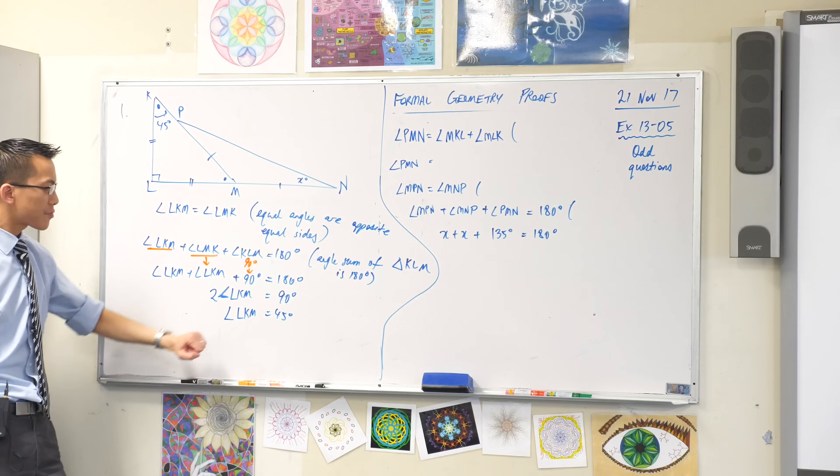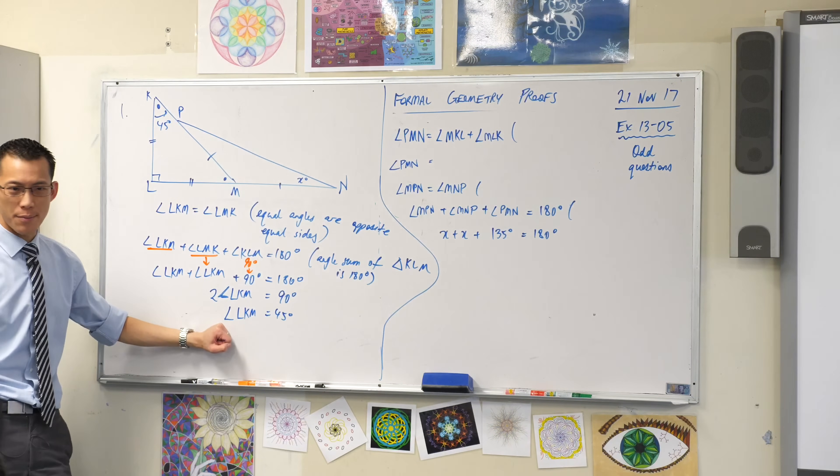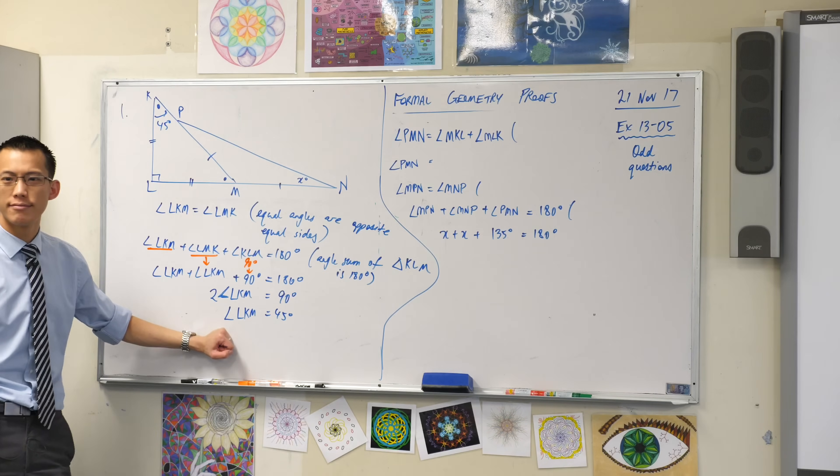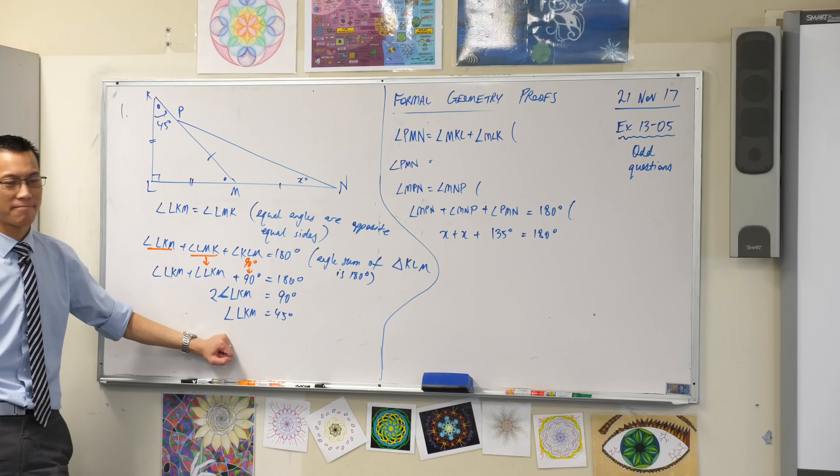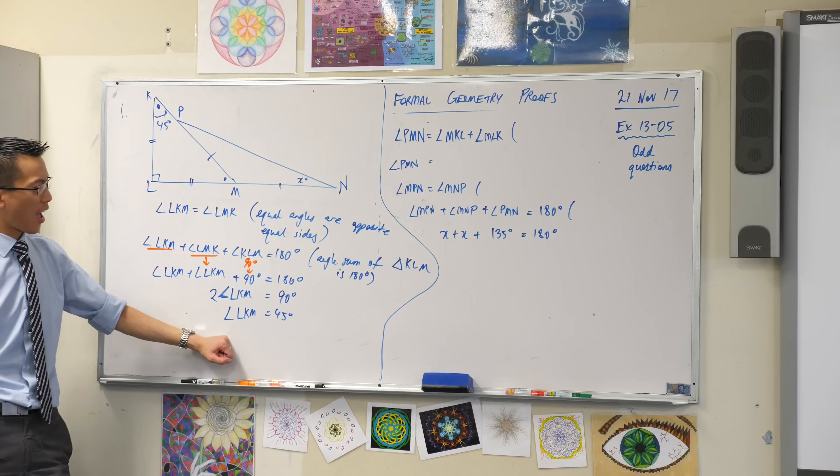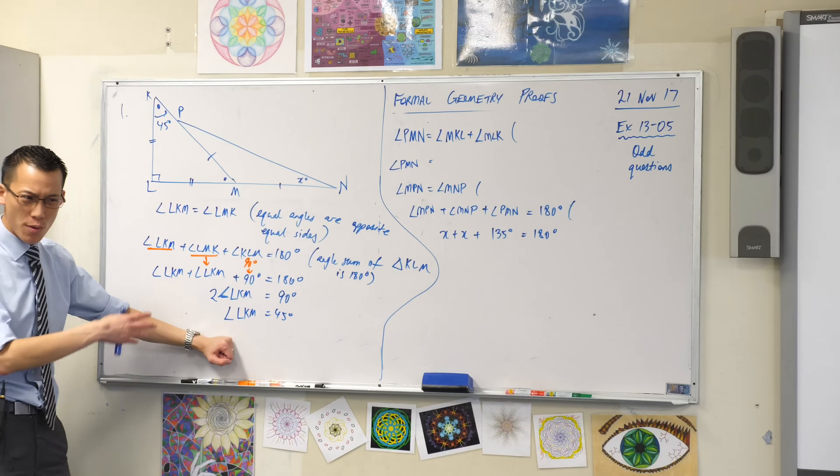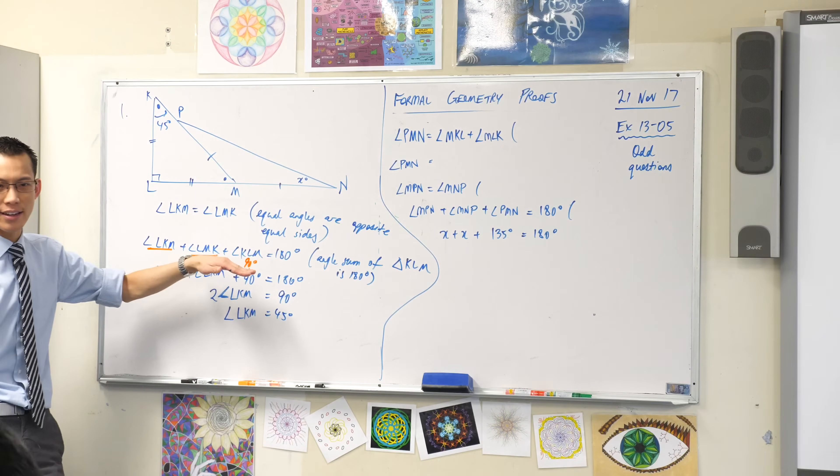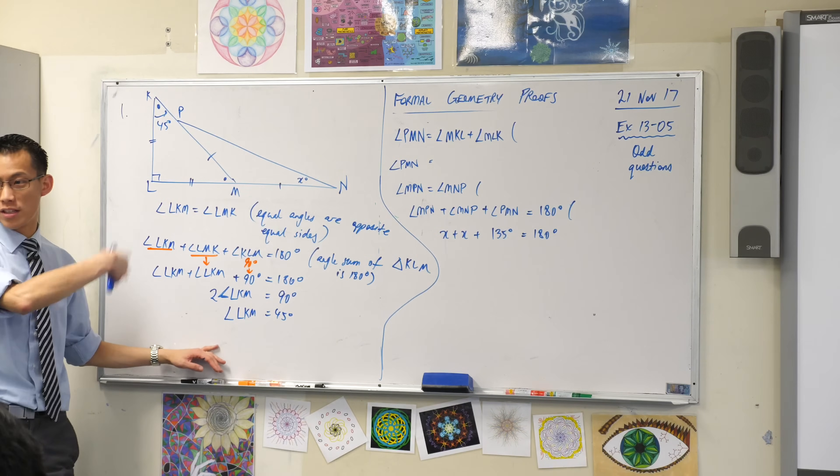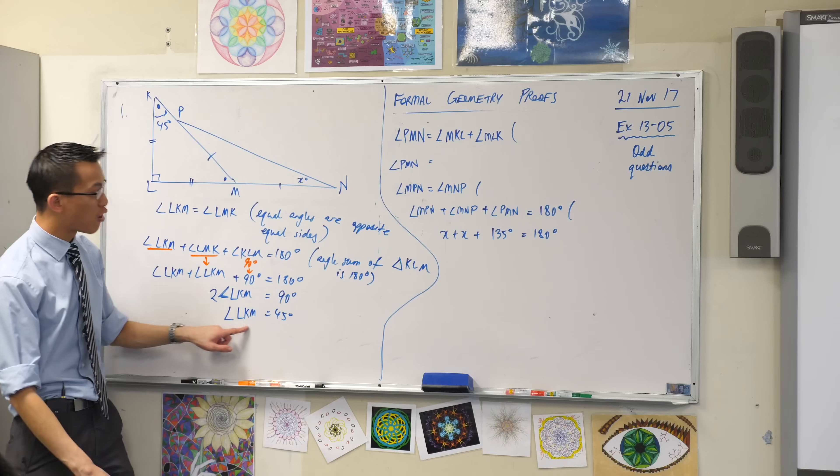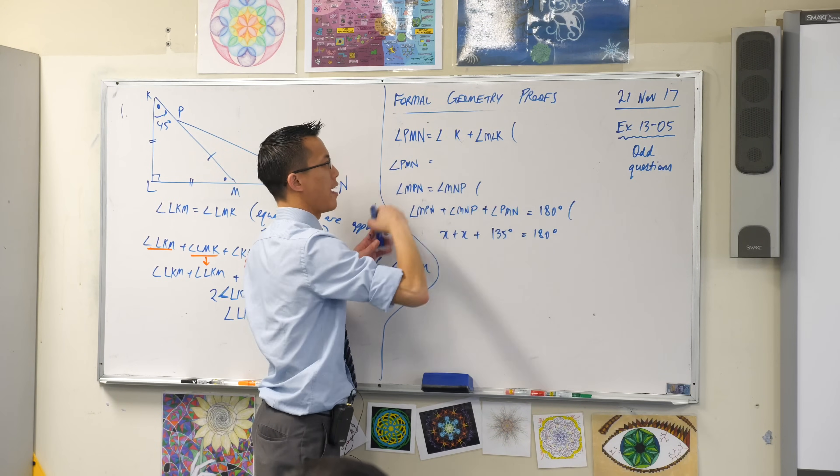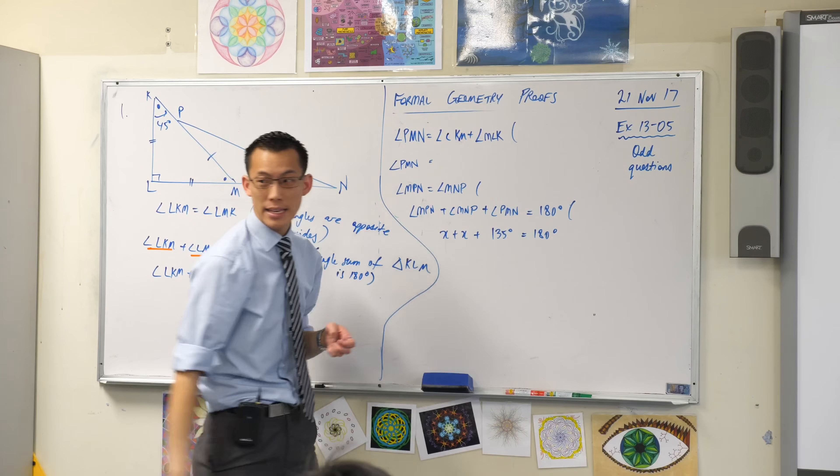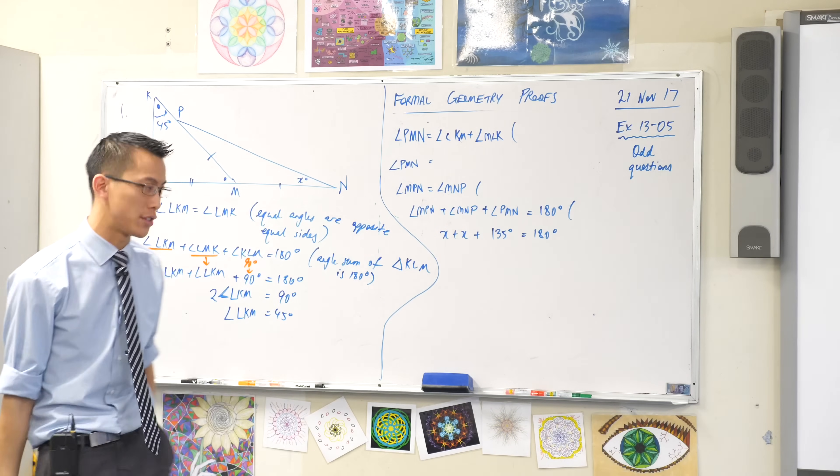So I want you to have a look at this line. We established that LKM was 45 degrees. Once I know what this angle is I want to try and move forward from there. Each line in the proof builds on the ones before it. So that's why you can see LKM, I've actually written it in backwards order here. LKM appears in the next line that is in my proof and this happens quite often.